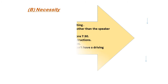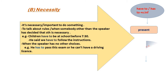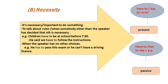To express necessity, we use 'have to' or 'has to' plus the infinitive. In the passive form, it's 'have to / has to + be + past participle.' We use 'have to / has to' when something is very necessary or important, or when we talk about rules where someone other than the speaker has decided it's necessary — for example, 'children have to be at school before 7:30' is a school rule, and 'we have to follow the instructions' means someone else ordered it.